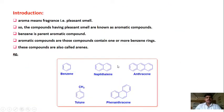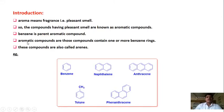In introduction, aroma means fragrance, that is pleasant smell. Aromatic compounds are those compounds which have a pleasant smell, and the parent aromatic compound is benzene. Aromatic compounds are those which contain one or more benzene rings. The benzene ring is the basic unit of aromatic compounds, and another benzene ring can be attached to it or it can have substituents at different places.